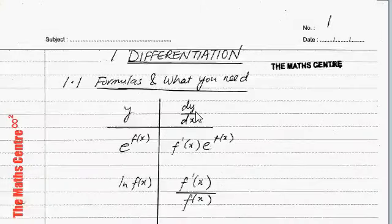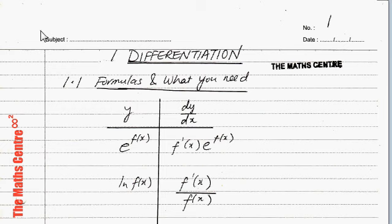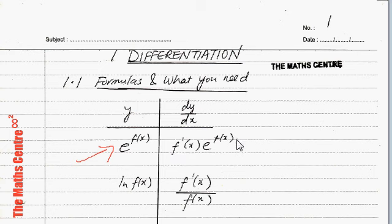In this chapter, we are going to be looking at differentiation. First, let's look at the formulas that we need. I have given you the formulas in the form of a table, so let's look at the formulas one by one. First off, if y equals e to the power of f(x), then dy/dx equals f'(x) times e to the power of f(x).